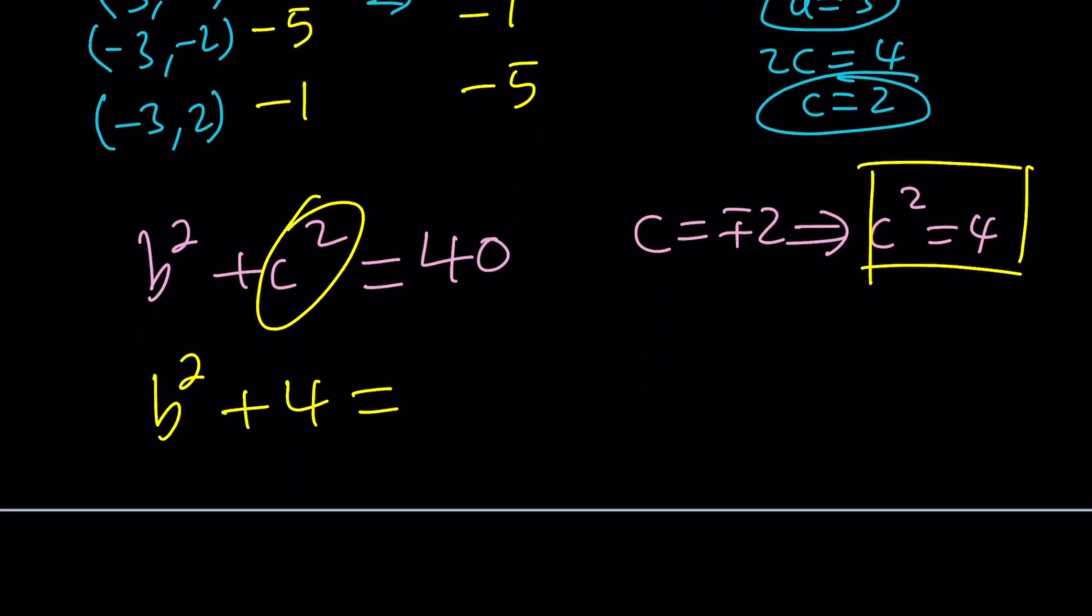That only gives us a single value. But then from here, we get B squared equals 36, which gives us 2 B values. 2B or not 2B. So, B equals 6 or B equals negative 6. So, this means that we can go ahead and put it all together.